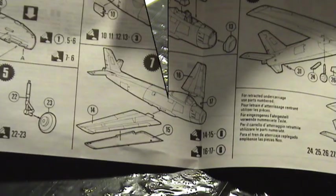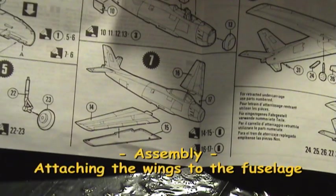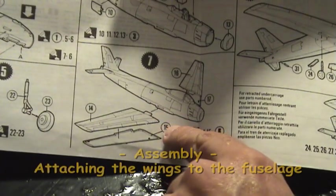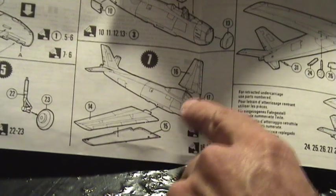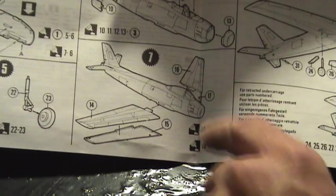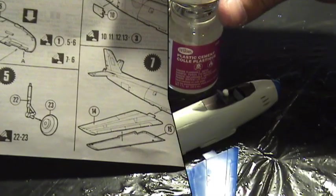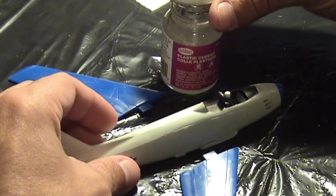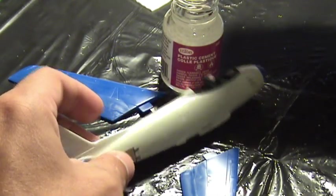Follow the instructions to attach the wings to the fuselage. Apply the liquid cement in small quantities to one side of the fuselage at a time.